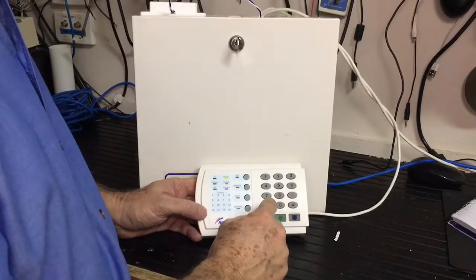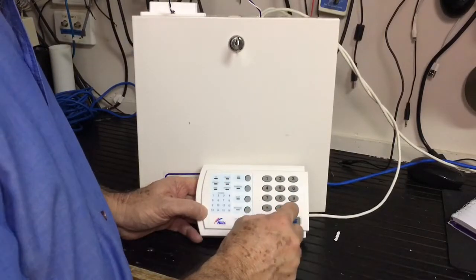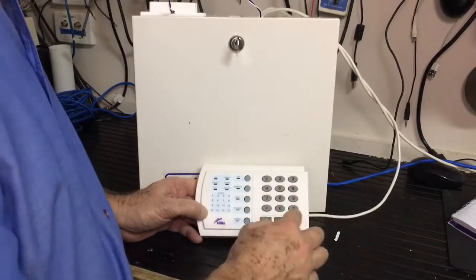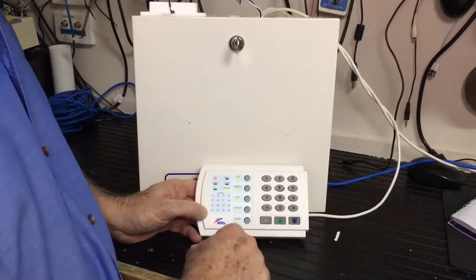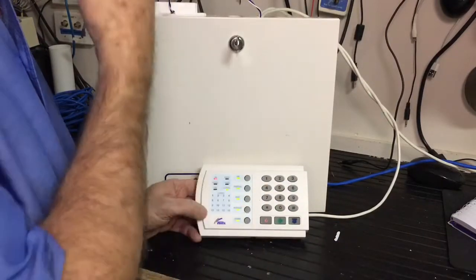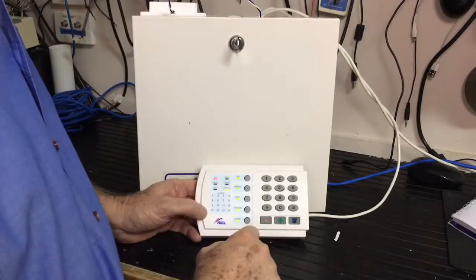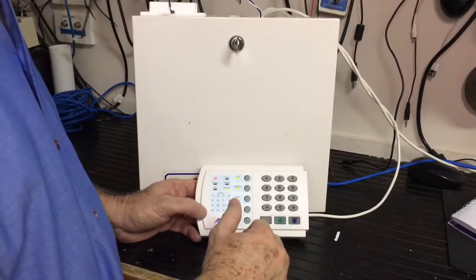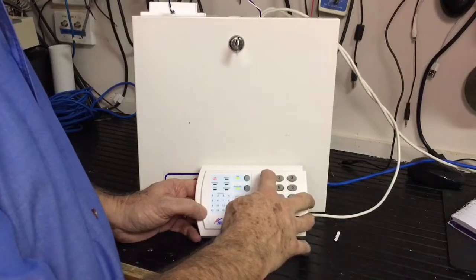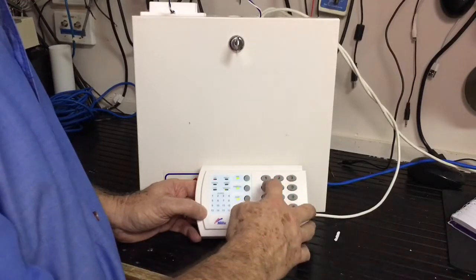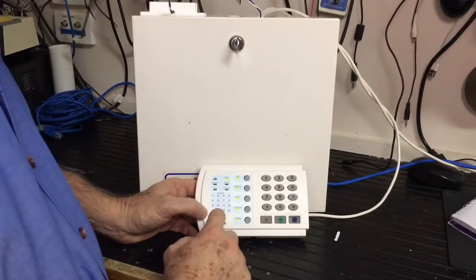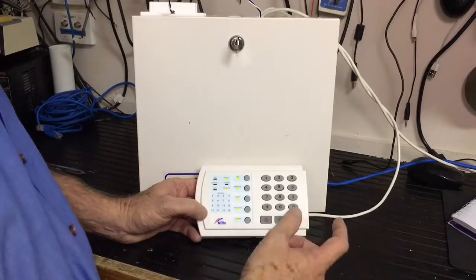So what we're going to do, basically, we're going to go into program mode, program code in, go to device zero. And what we're going to do first is we're going to actually create our new zone type. So if we go to location 104, and what we need to do is we need to turn a couple of segments on.